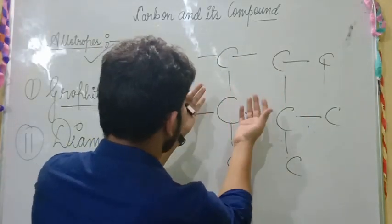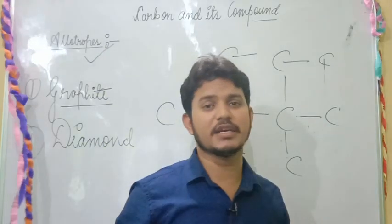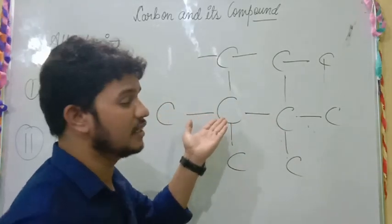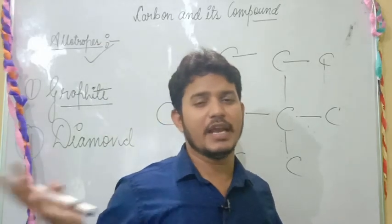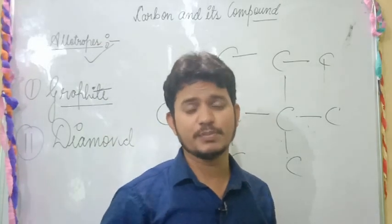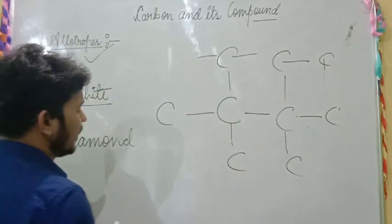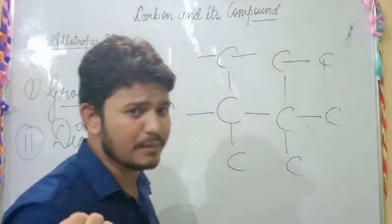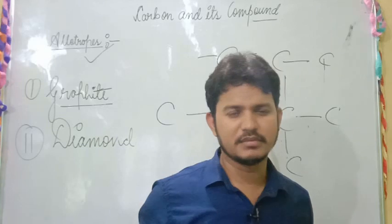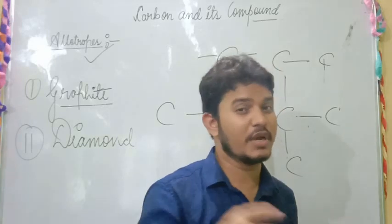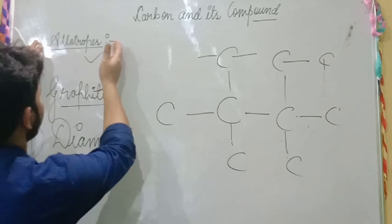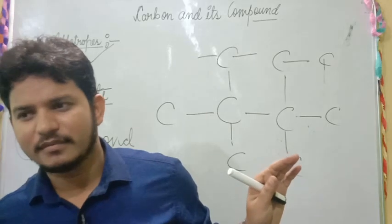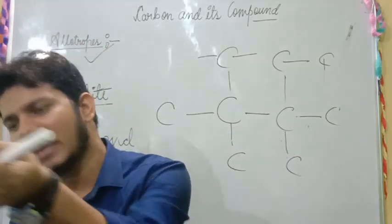In diamond, all four electrons are used for bonding with different carbon atoms, meaning there are no free electrons. Diamonds are a poor conductor of electricity because they do not have any free electrons. They are closely packed and very hard. Diamond is the hardest substance discovered so far.